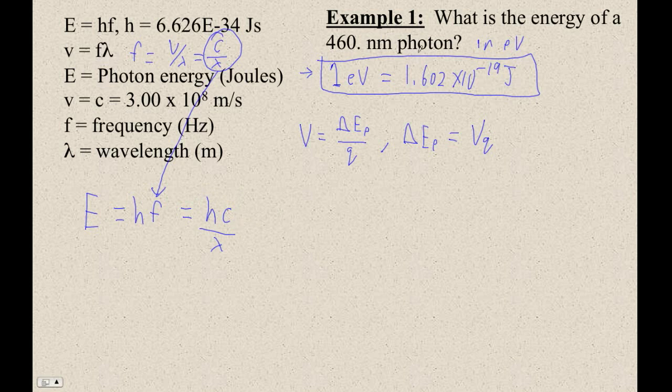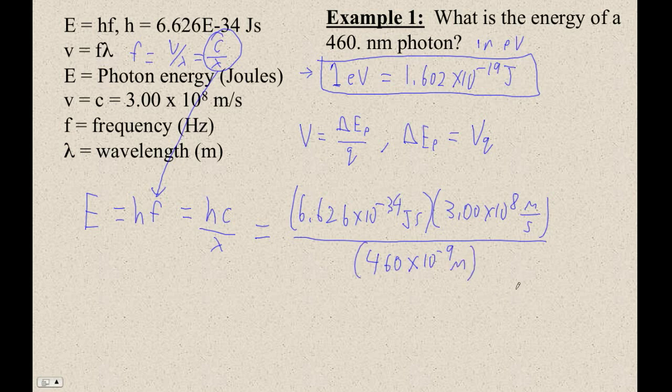So this is really easy. Basically, I'm just going to plug in here, 6.626 times 10 to the minus 34th joule seconds. That's what h is. And then c is 3.00 times 10 to the eighth meters per second. And then we're dividing by 460 nanometers, so 460 times 10 to the minus ninth meters. And then, you know, if you look at this, the meters goes away, the seconds and the seconds cancel. You end up with joules. So I'm typing that into my calculator right now.